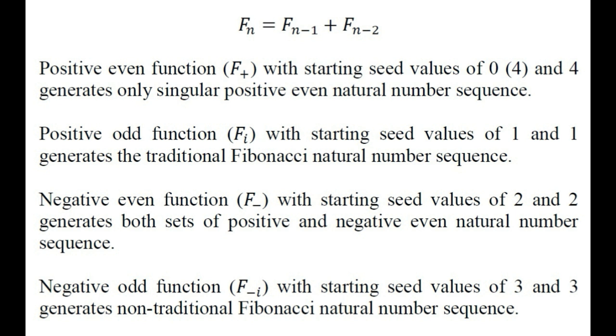Negative odd function F-i with starting seed values of 3 and 3 generates non-traditional Fibonacci natural number sequence: 3, 3, 6, 9, 15, 24, and so on.